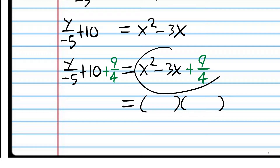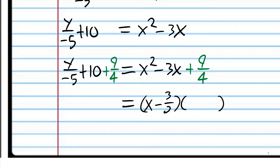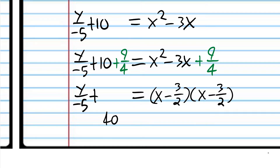At this point, we change to power notation, and we really only have one more thing to do — get y by itself. So we're going to subtract 49 over 4 from both sides, giving us x minus 3 halves squared minus 49 over 4. Now we just have to multiply both sides by negative 5. Using the distributive property: y equals negative 5 times x minus 3 halves squared. And then negative 5 times negative 49 over 4 is positive 245 over 4. So that is vertex form.